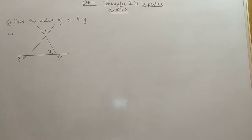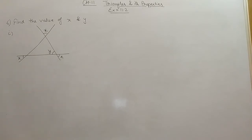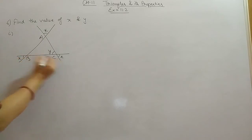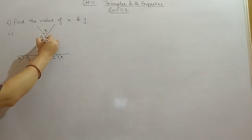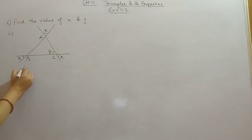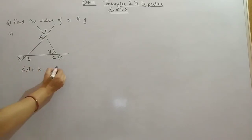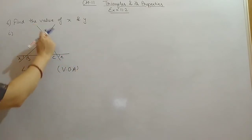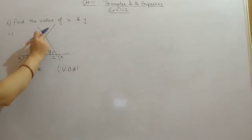The first part has a figure given. From this figure, we have to find out the value of X and Y. When the triangle is given, we can name this triangle A, B, and C. Angle A will be equal to X. The reason we give here is vertically opposite angles — these two lines are intersecting each other, so this angle and this angle will be equal.